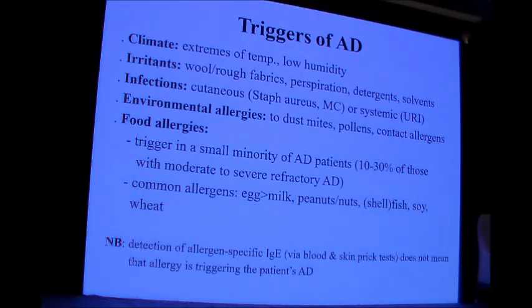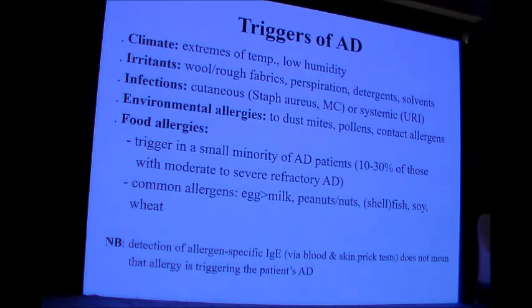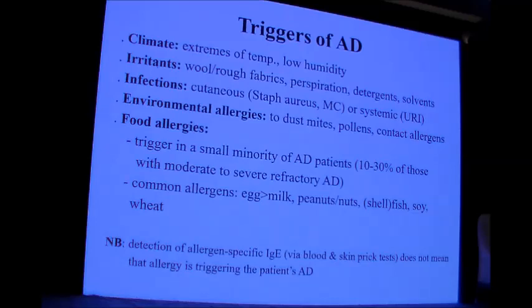Environmental allergens — dust mites, pollens, and contact allergens — can trigger atopic dermatitis. Food allergies trigger atopic dermatitis in a small minority of patients; common food allergens include egg, milk, peanuts, nuts, shellfish, soy, and wheat. Importantly, detection of allergen-specific IgE via blood test or skin prick test does not confirm that allergy is triggering the patient's atopic dermatitis. Careful observation is primary, and tests serve only to confirm clinical findings — not to diagnose alone.